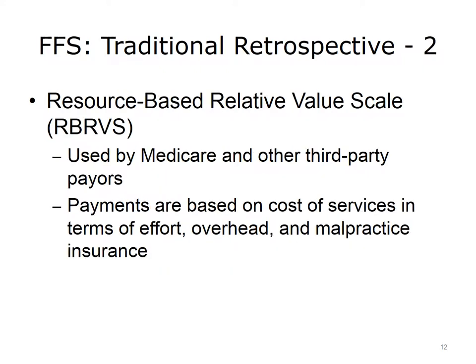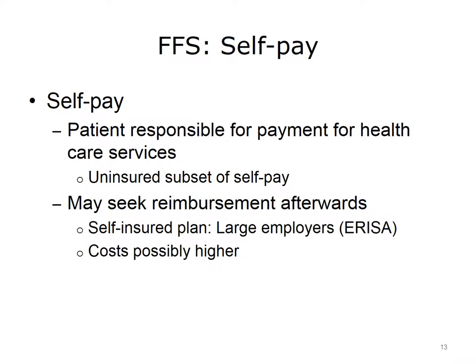Another type of retrospective fee-for-service payment is the resource-based relative value scale, or RBRVS, used by Medicare and other third-party payers. Payments are based on the cost of services in terms of effort, overhead, and malpractice insurance. The second form of fee-for-service payment, self-pay, is when patients pay directly for the services they receive. For true self-pay patients, providers may offer a discount.